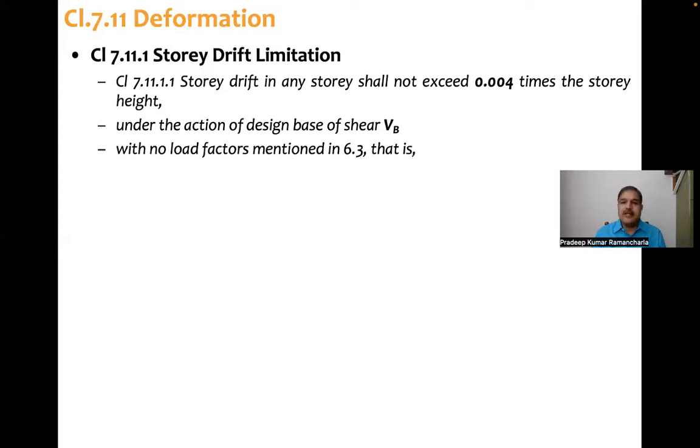With no load factors mentioned in 6.3, that is with partial safety factors for all loads taken as one. We take load factors for several load combinations, say dead load plus live load 1.5 times, 1.2 times. All those load factors should be set to one. That means the actual loads.